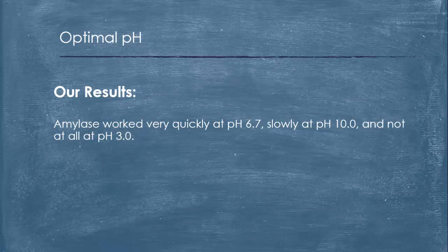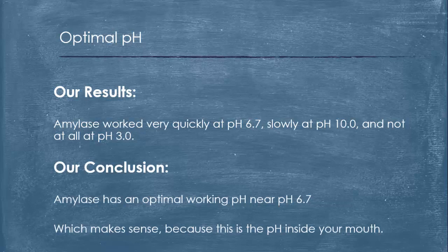So our results: amylase worked very quickly at pH 6.7, slowly at pH 10, and not at all at pH 3.0. The conclusion we can make then is amylase has an optimal working pH near pH 6.7, and again that makes sense because it's the pH that's inside your mouth and amylase is found in your saliva.